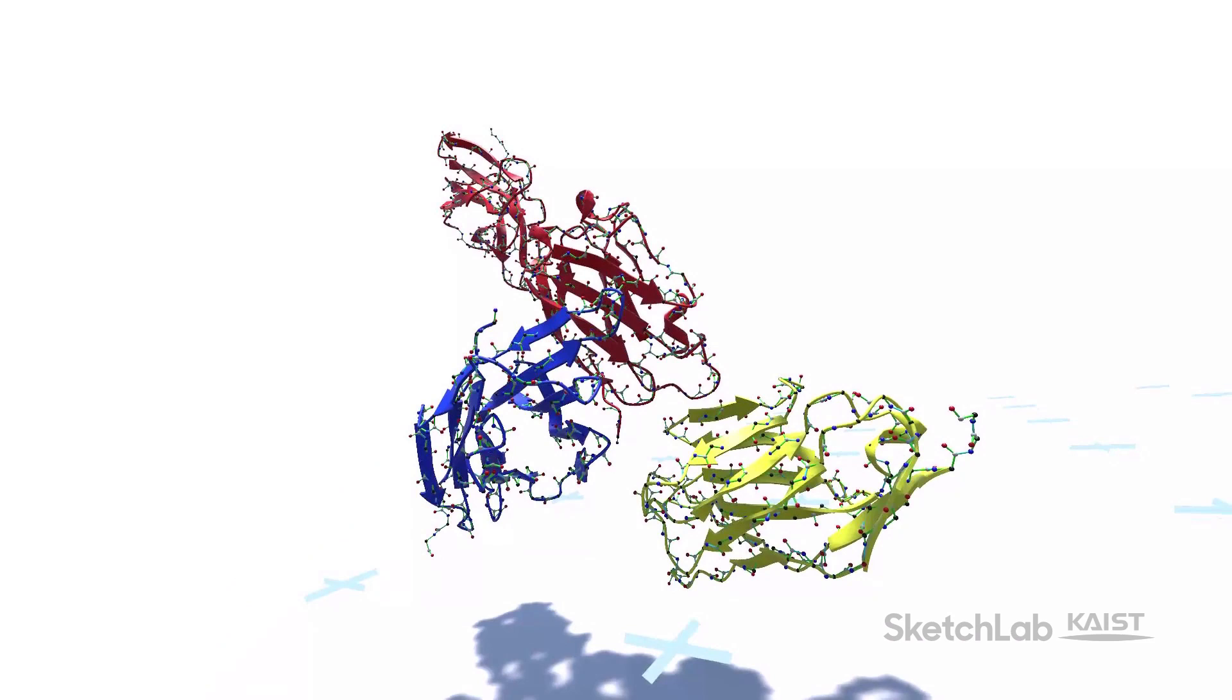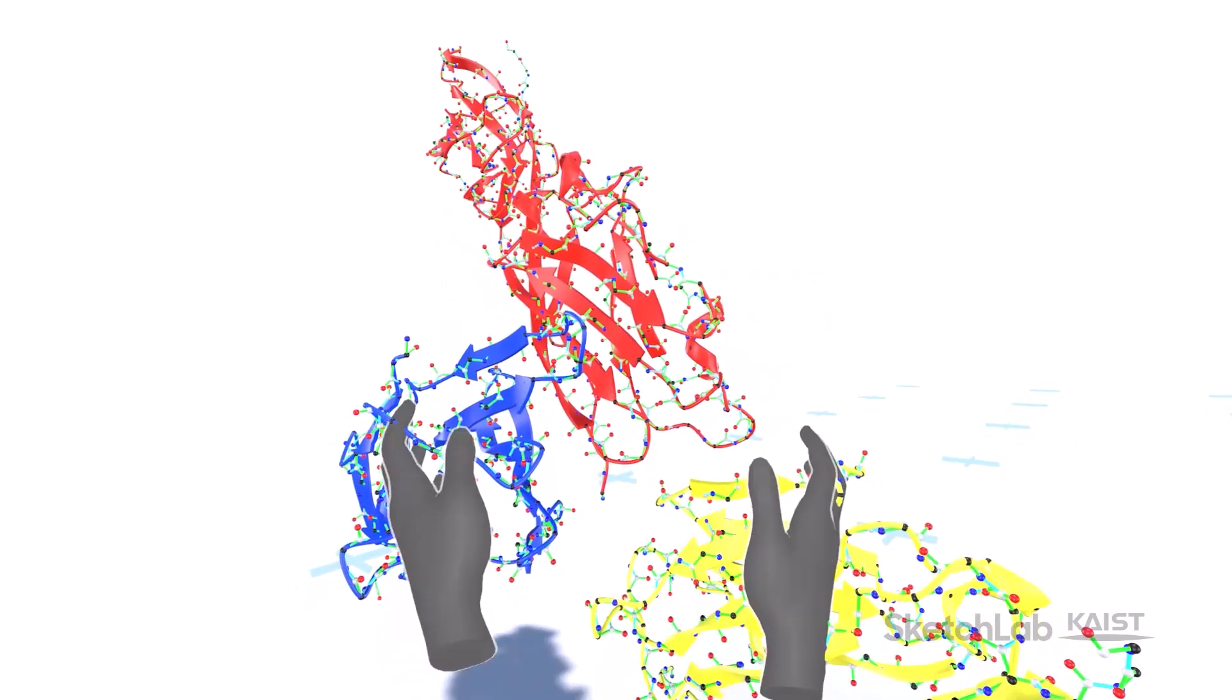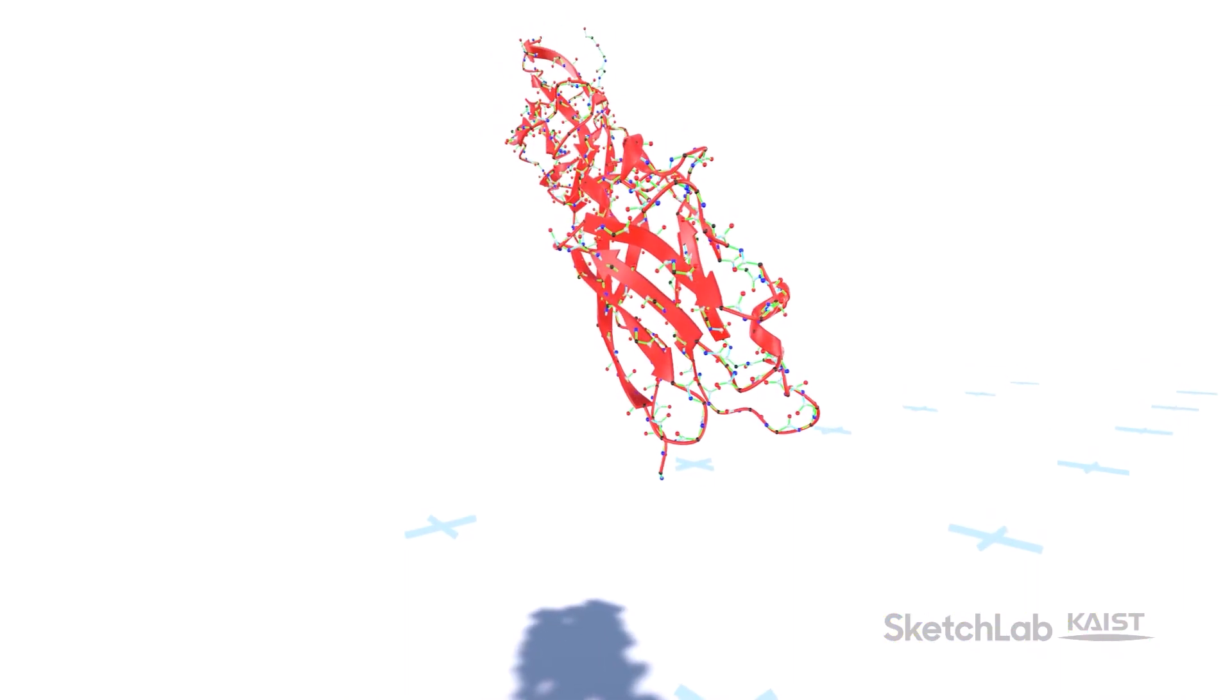We showcase the user scenario of our system. A PD-L1 protein on a cancer cell is known to bind to PD-1 proteins on T cells and restrain the T cells activation that is necessary for killing pathogens in an immune response. Using our system, we will design a new protein that binds to PD-L1 in place of PD-1 to prevent this.